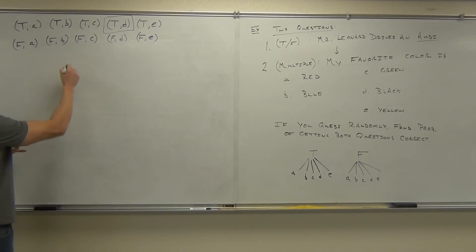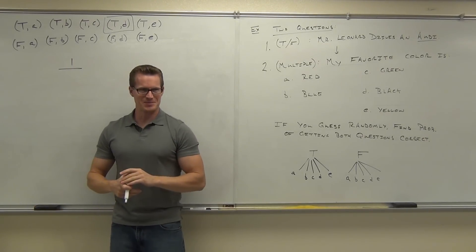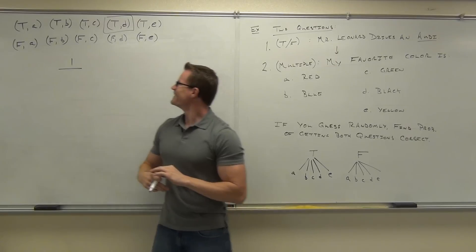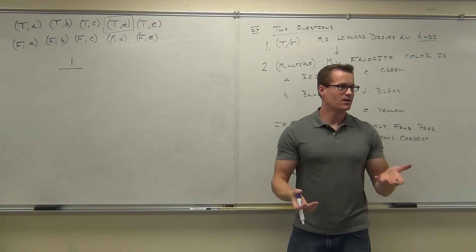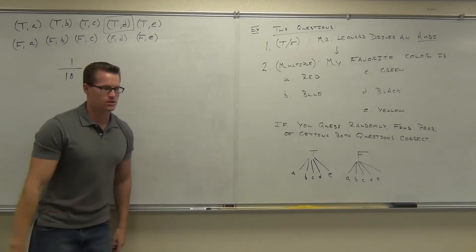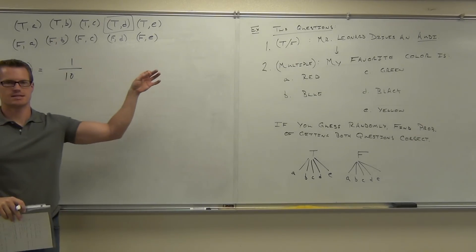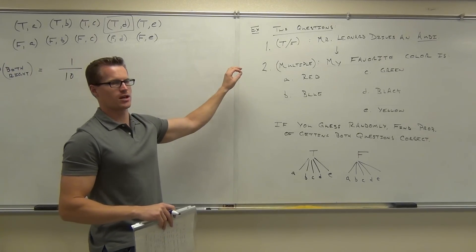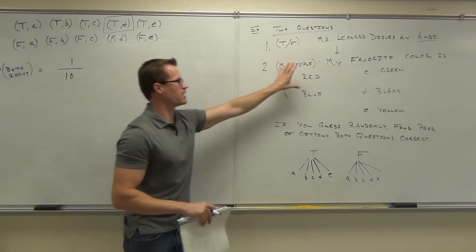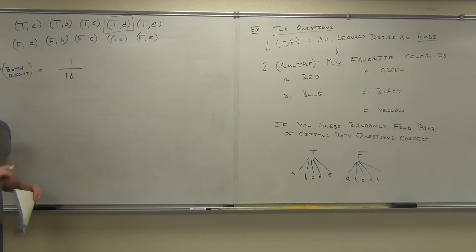So if that's the correct answer, how many total choices do you have? There are ten ways you can answer the question. Only one of them is right, so it's a one-in-ten chance you're going to get both things correct. The probability of getting both right is the probability that you randomly select true and randomly select the correct color answer.